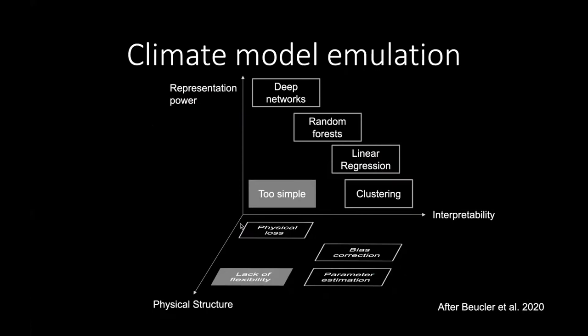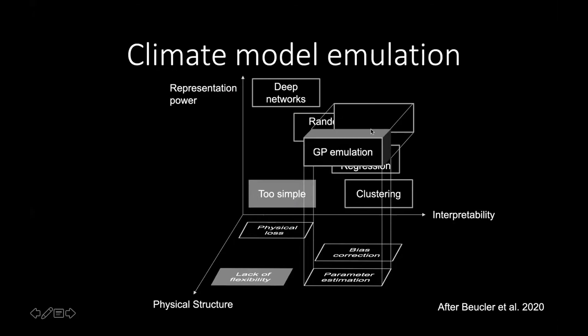Now I really like this from Tom's recent chapter on machine learning for cloud physics. The work I'm going to talk about fits into this narrative of how machine learning can contribute to these problems. We have increasing physical structure and interpretability to the right. What I'm going to describe is a form of parameter estimation. I want to better estimate what the parameters that go into our model are using Gaussian process emulation, which has high representation power and is more interpretable than deep neural networks.